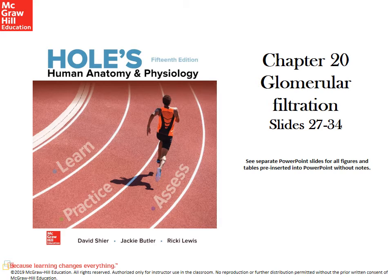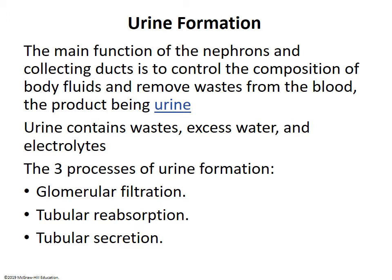We're going to talk about glomerular filtration in chapter 20 of the urinary system. The urinary system forms urine, and the main functional unit is the nephron. Nephrons filter the blood, dump fluid into collecting ducts, and once it reaches the minor calyx it is called urine. Urine contains waste, and the system manages excess water — it's about water balance, which ties directly to osmosis, regulating the water concentration of your body.